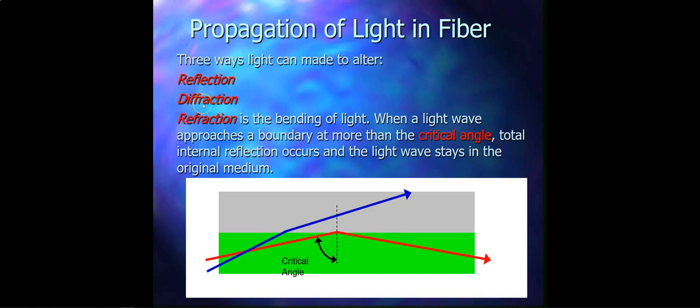Next is diffraction. Light wave signals that undergo diffraction become slightly blurred or distorted, which limits the bandwidth and also drastically reduces the received energy at the fiber optic receiver. Now, third is refraction, and refraction is the mode of fiber optic transmission. Fiber optics mainly rely on the mechanism of refraction for conducting light waves down to the core.